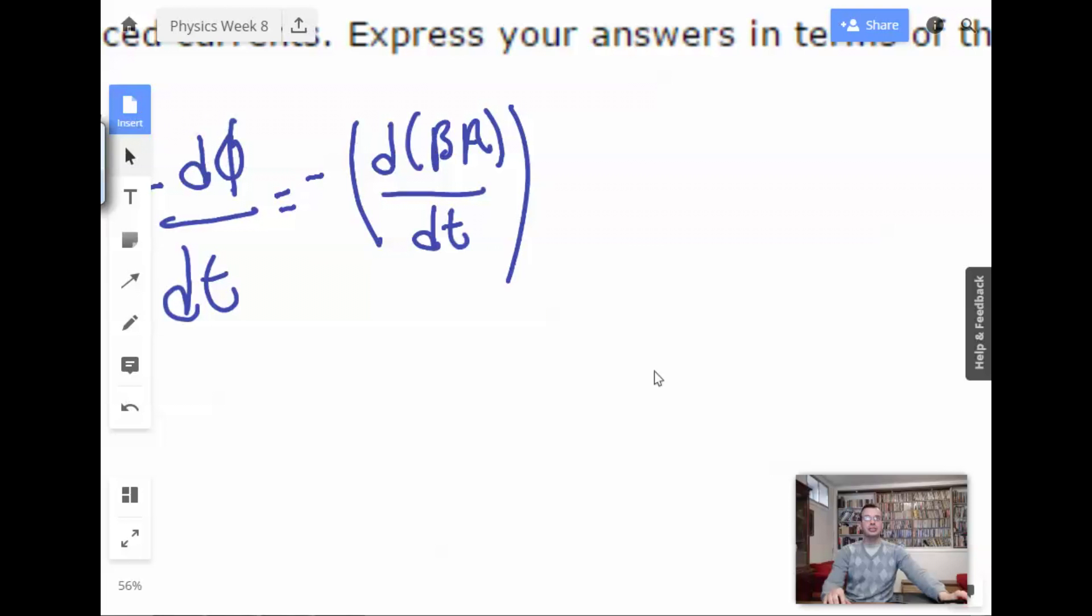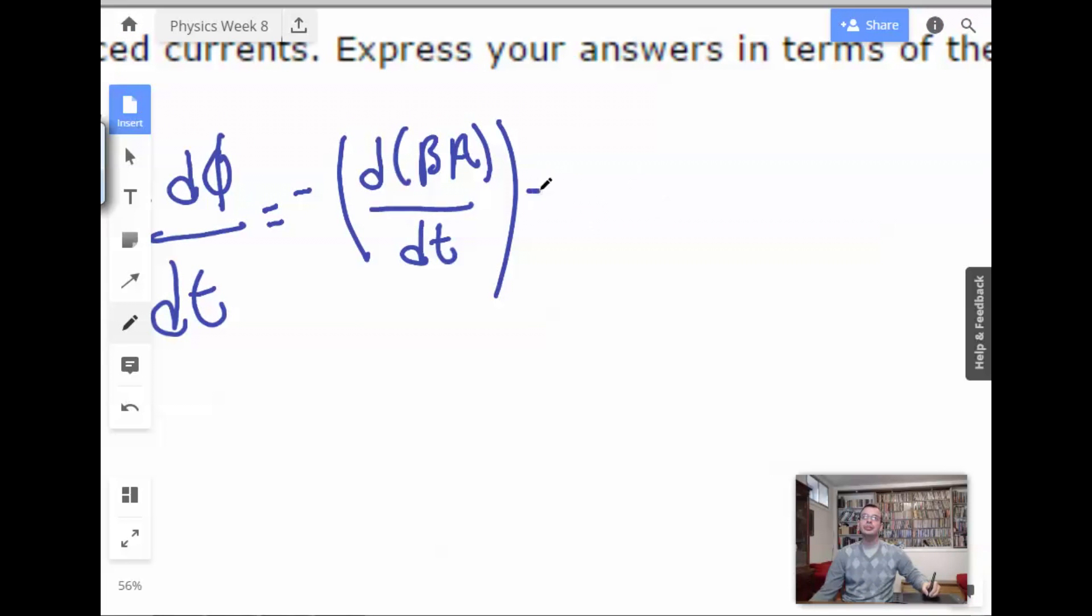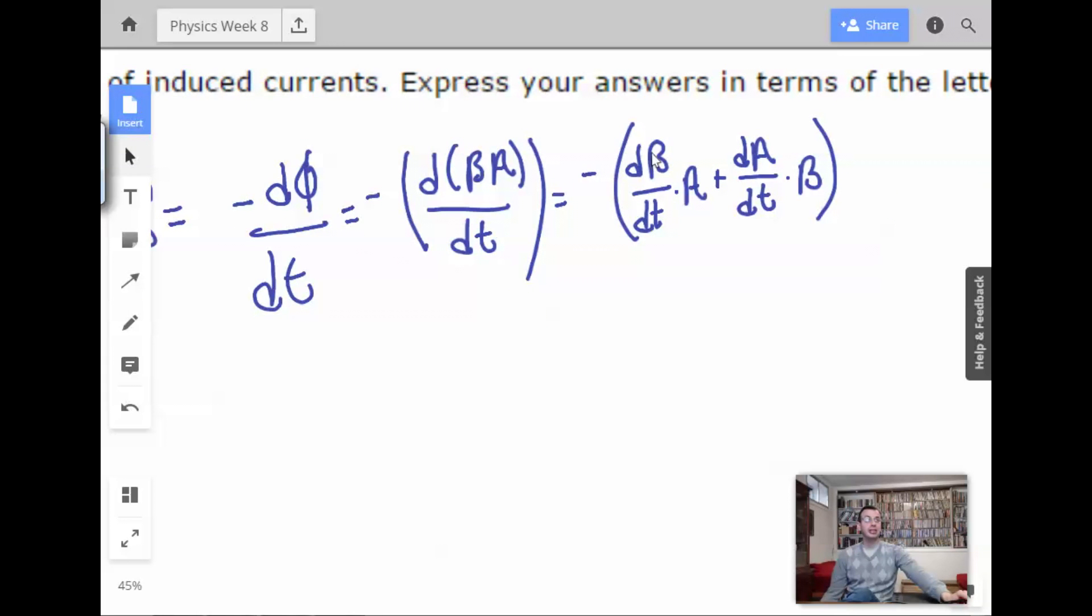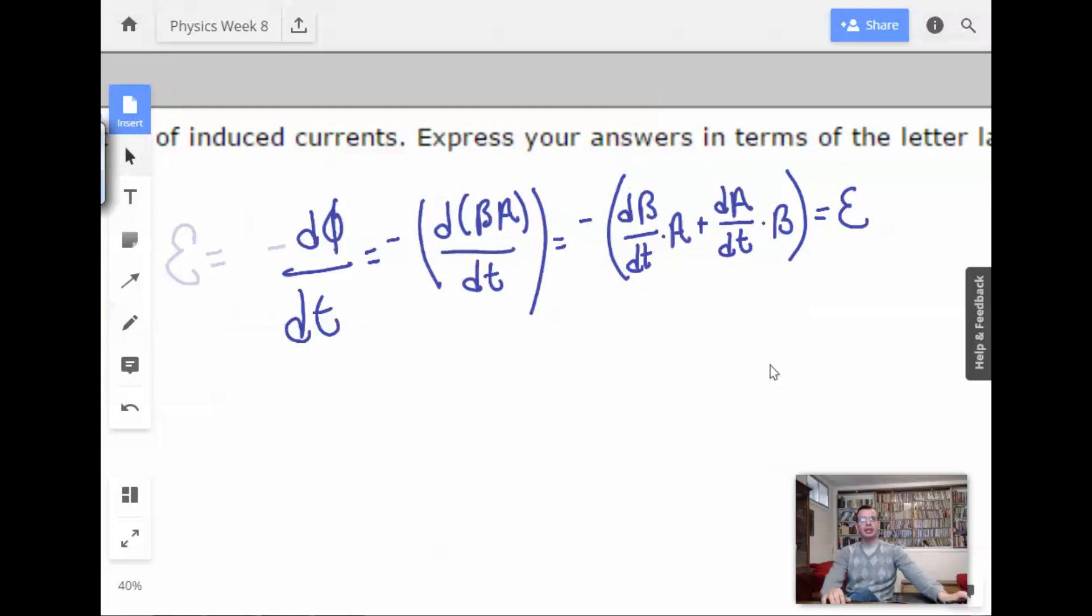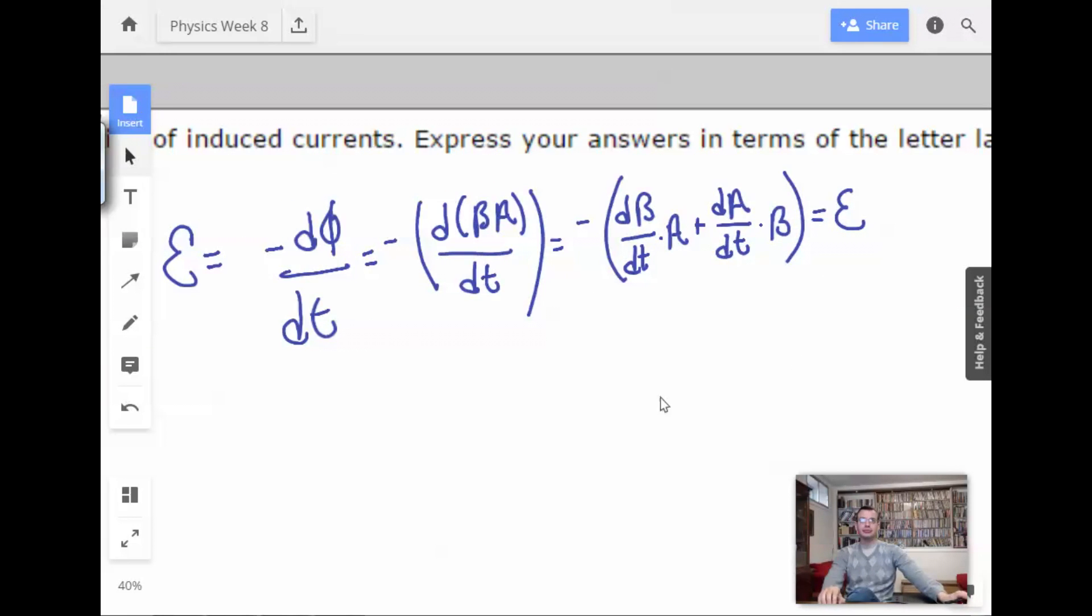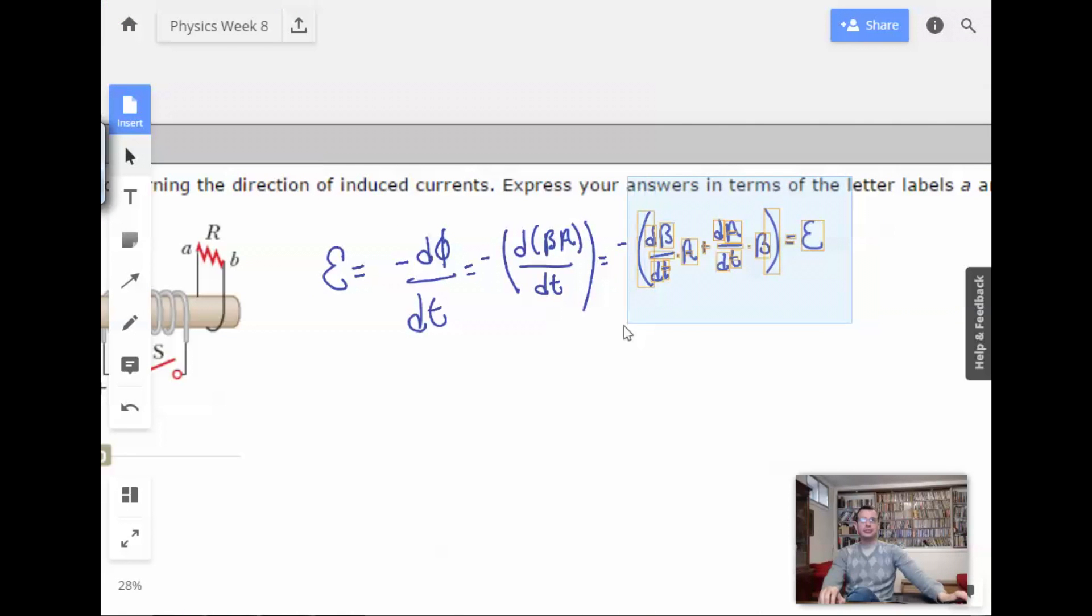All right. Because we know that flux is magnetic field times area. So then we're going to use the product rule. We're going to use the product rule. So this is going to be dB/dt times A plus dA/dt times B. So if you have either a changing magnetic field or a changing area, then you're going to get an induced voltage. Induced voltage or EMF. All right. So I'm basically going to use this for every single one of them.